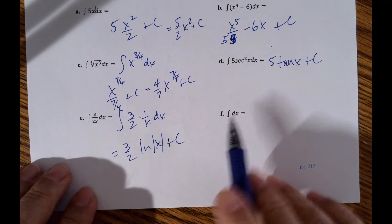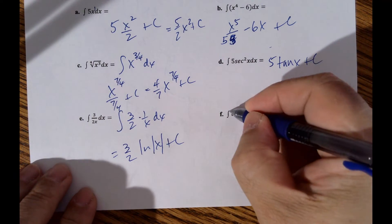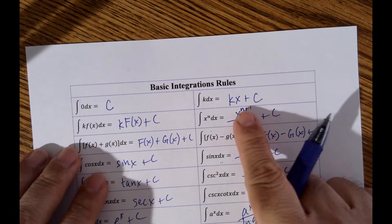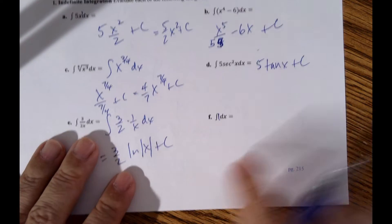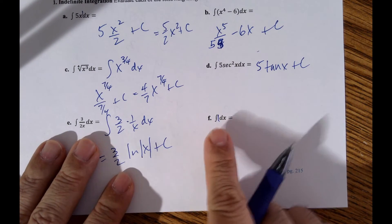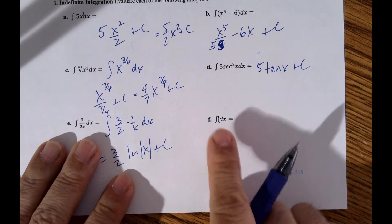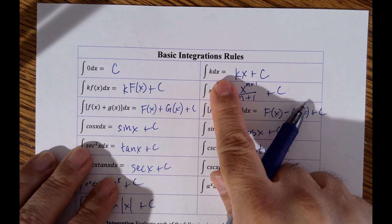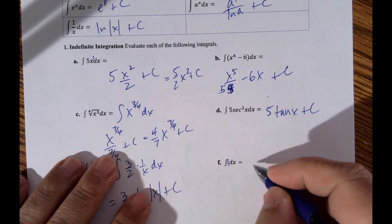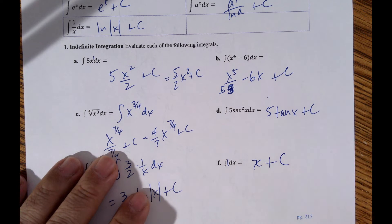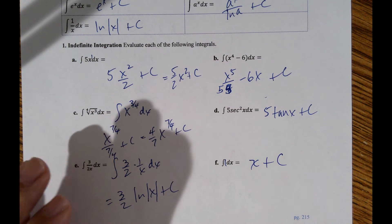Here, the integrand is essentially 1. If you don't see a number, there's probably a 1 or a 0 — here the case is 1. So k is 1, and the integral is just x, or 1x, plus C.